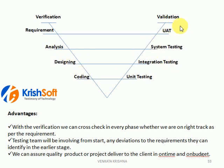One more thing happening in this model is that in the requirement phase, there may be reviews — for each and every document, each and every thing we are doing, reviews will be there. Walkthroughs will be there, inspections will be there. If we are doing all these things, obviously there is very less chance to move the mistakes from one phase to another phase.